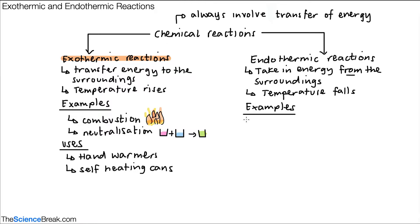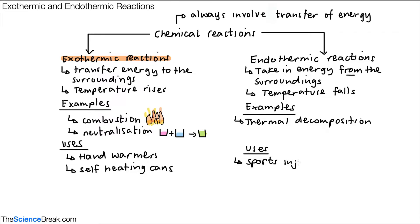We have a couple of examples of endothermic reactions. One is called thermal decomposition — this is when we break a chemical down using energy from the surroundings. We also have uses, one common use being a sports injury pack. These are used when someone hurts themselves; the pack cools down and can be placed on a joint or muscle to reduce pain and swelling.